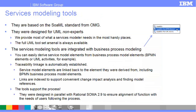The services modeling tools, also introduced in RSA 7.5.4, are based on the SOMA ML standard from OMG. They were designed for UML non-experts — we provide most of what a service modeler needs in the most handy places, while the full UML toolset arsenal is always available. The services modeling tools are integrated with business process modeling. You can easily derive service model elements from business process model elements, BPMN elements, or UML activities. Traceability linkage is automatically established, and service model elements are linked back to the element they were derived from. Links are indexed to support convenient change impact analysis and finding model references.